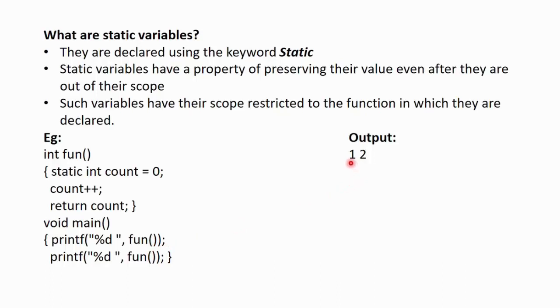So, the output is 1, 2. How is it possible? When function fun is called for the first time, this static int count variable is initialized to 0 and its value is incremented. So, now count will hold 1 and this 1 will be printed using this print statement here.